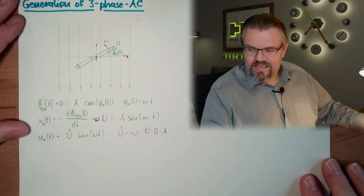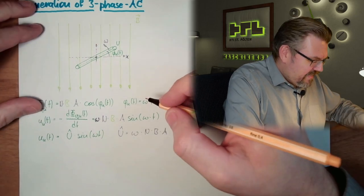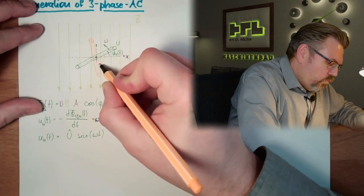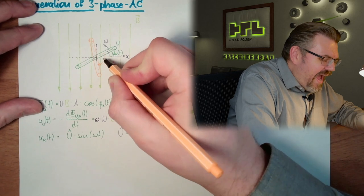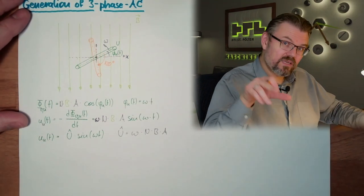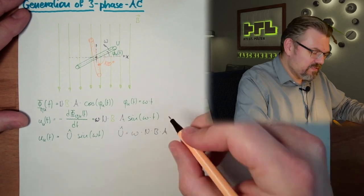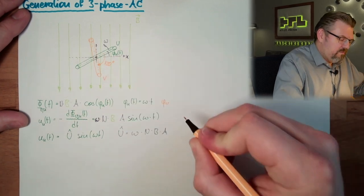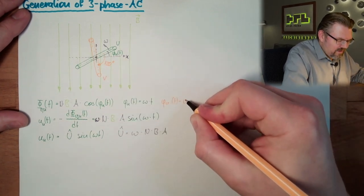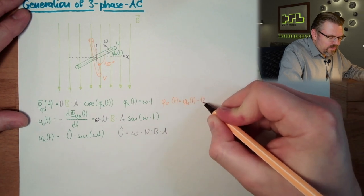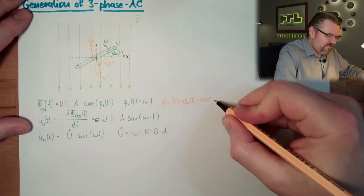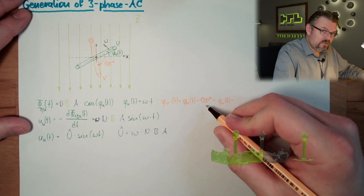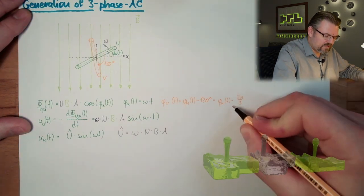Now I take a second coil. The second coil is 120 degrees behind the first coil. Physically turned 120 degrees. So this means my phi V from T is nothing than my phi U from T minus 120 degrees. And if I'm thinking about in radians, then we have phi U from T minus 2 pi third. This is radian, this is degree.